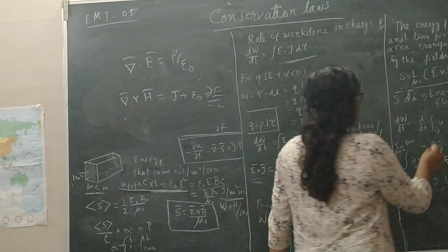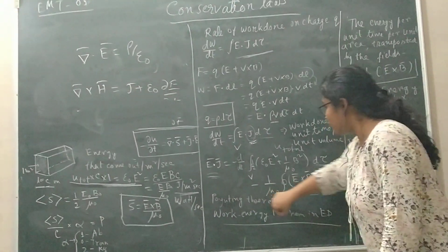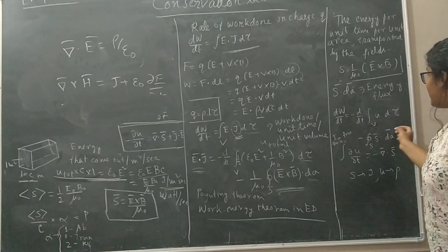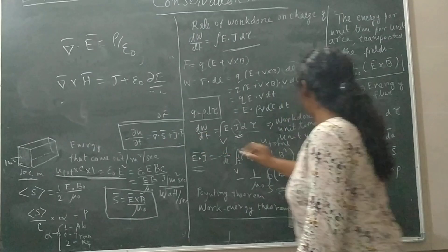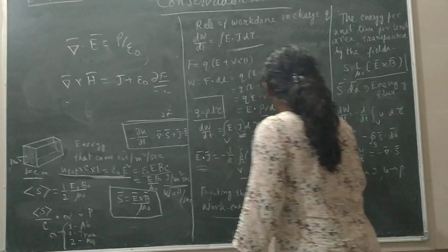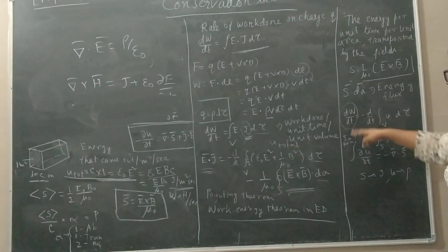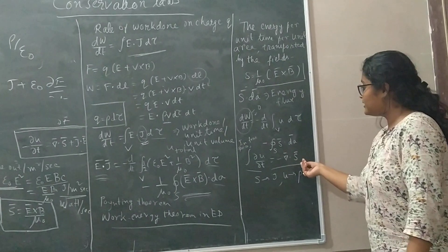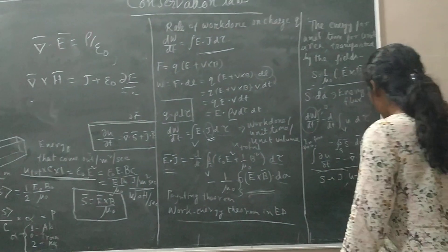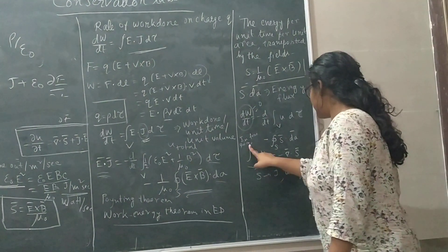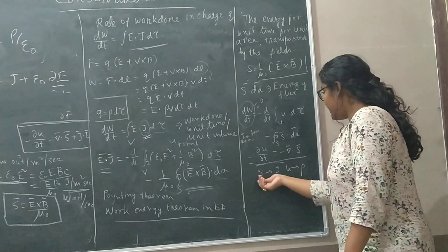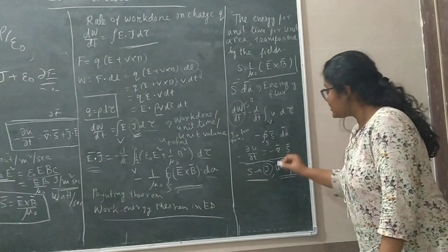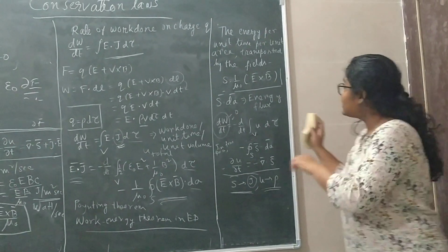Writing the Poynting theorem in differential form: dW/dt = −∂u/∂t − ∇·S. When there is no work done on the charges (dW/dt = 0), we get ∂u/∂t = −∇·S. Compare this with the continuity equation ∂ρ/∂t = −∇·J: here the Poynting vector S is analogous to J, and the energy density u is analogous to ρ. This expresses the conservation of electromagnetic energy.